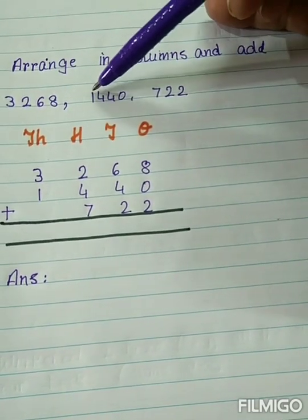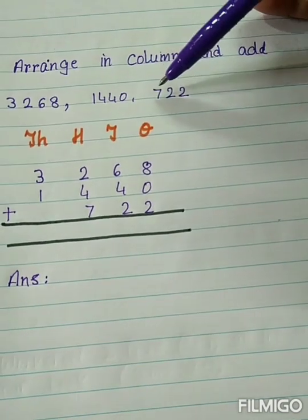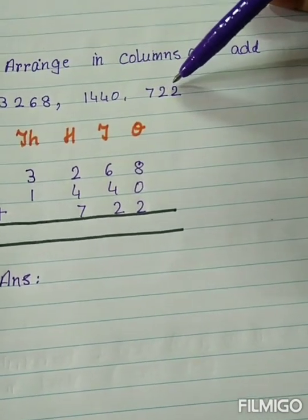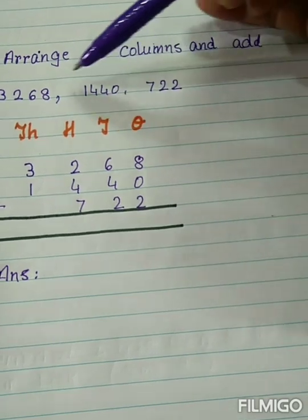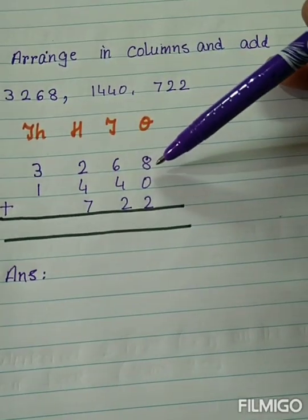3268, 1440, 722. So we have to arrange these numbers according to their place values.